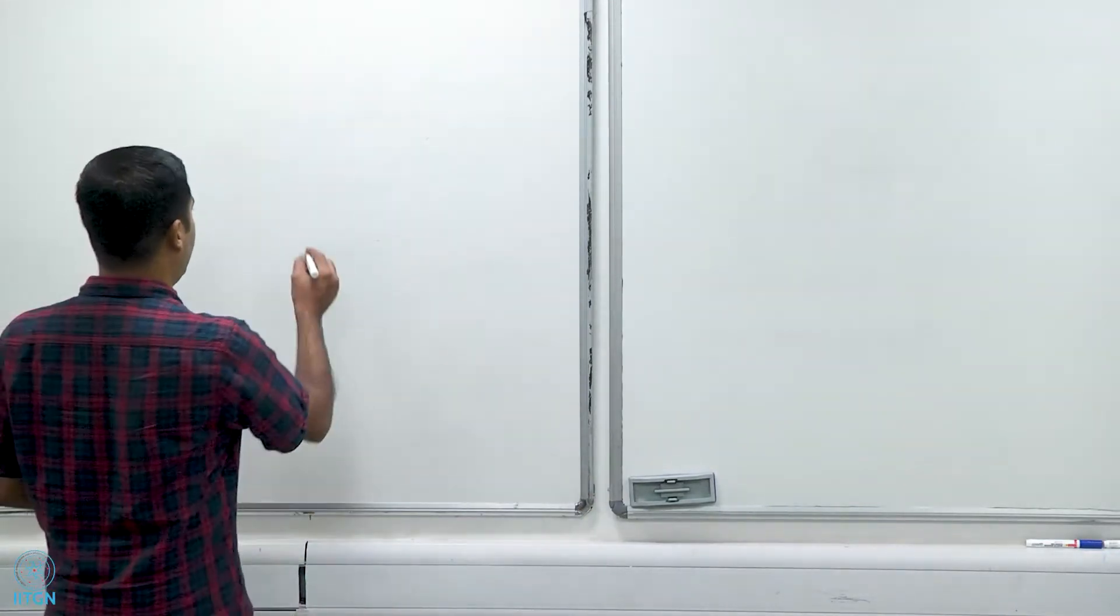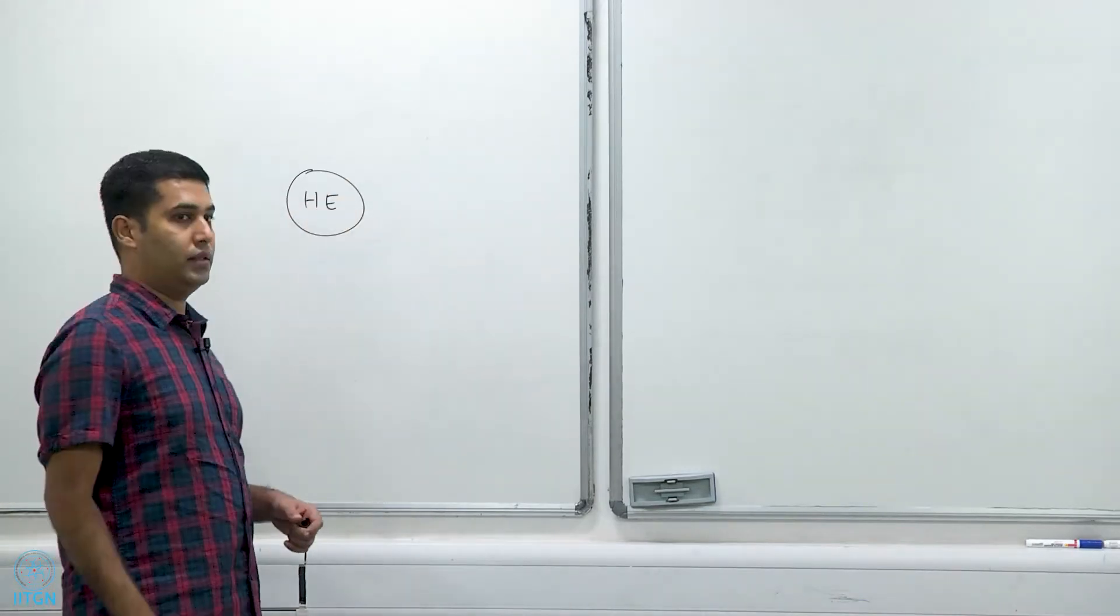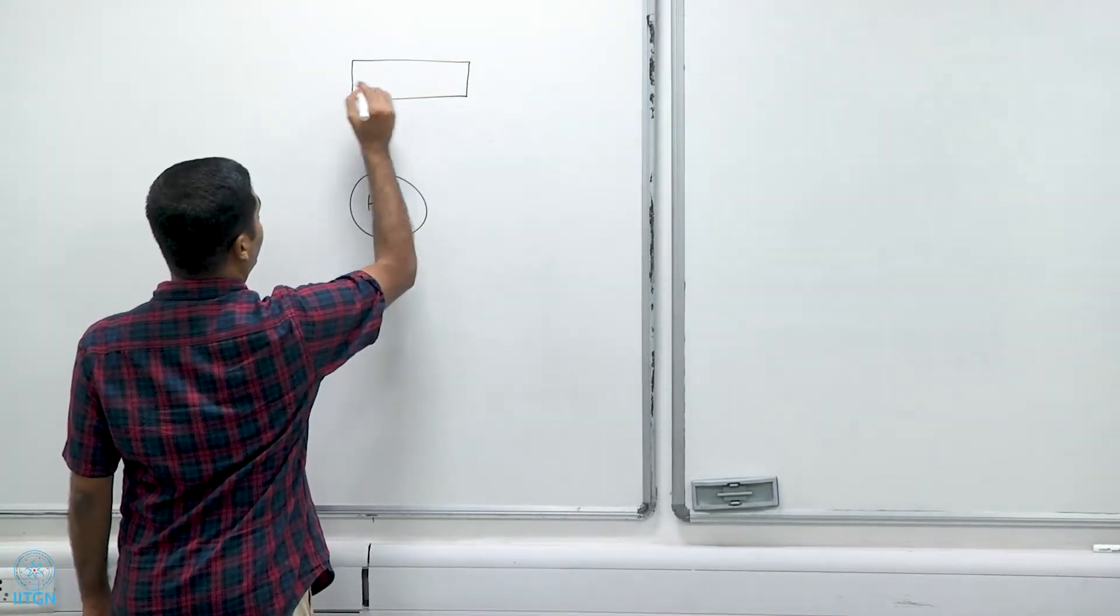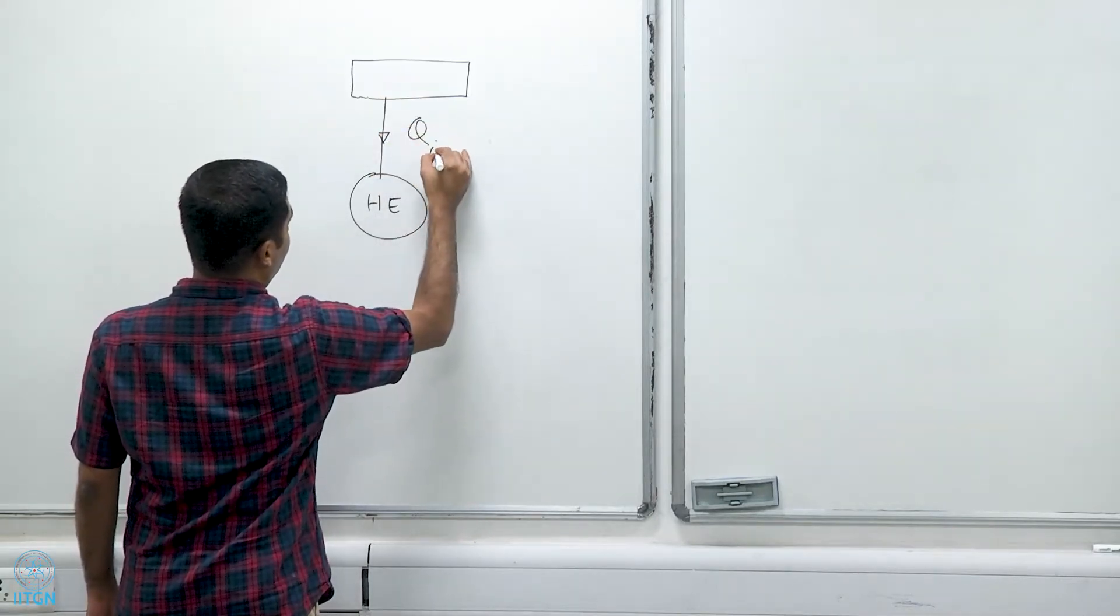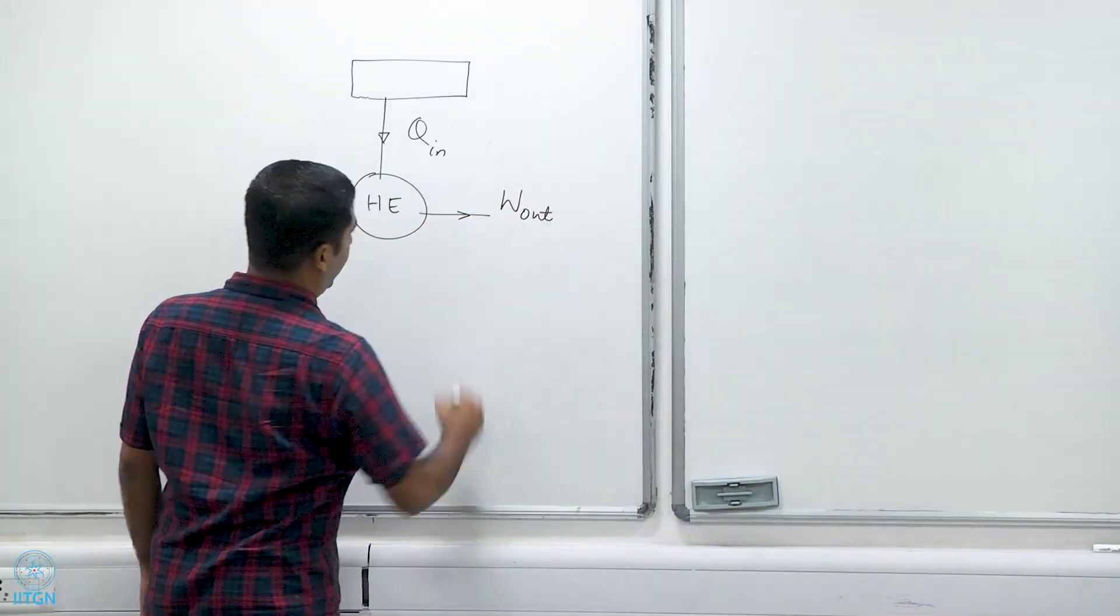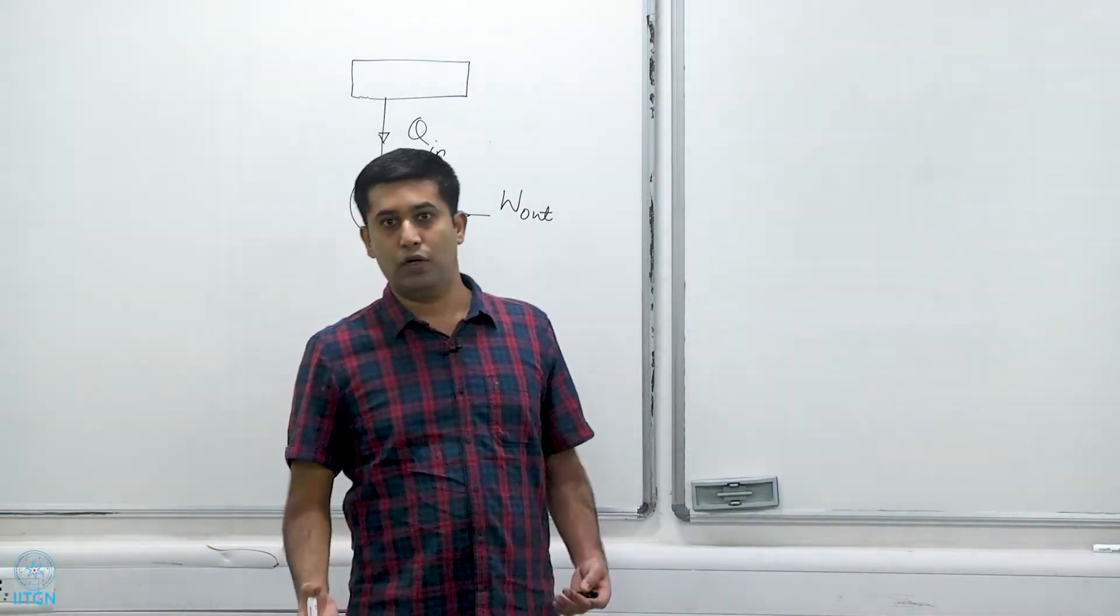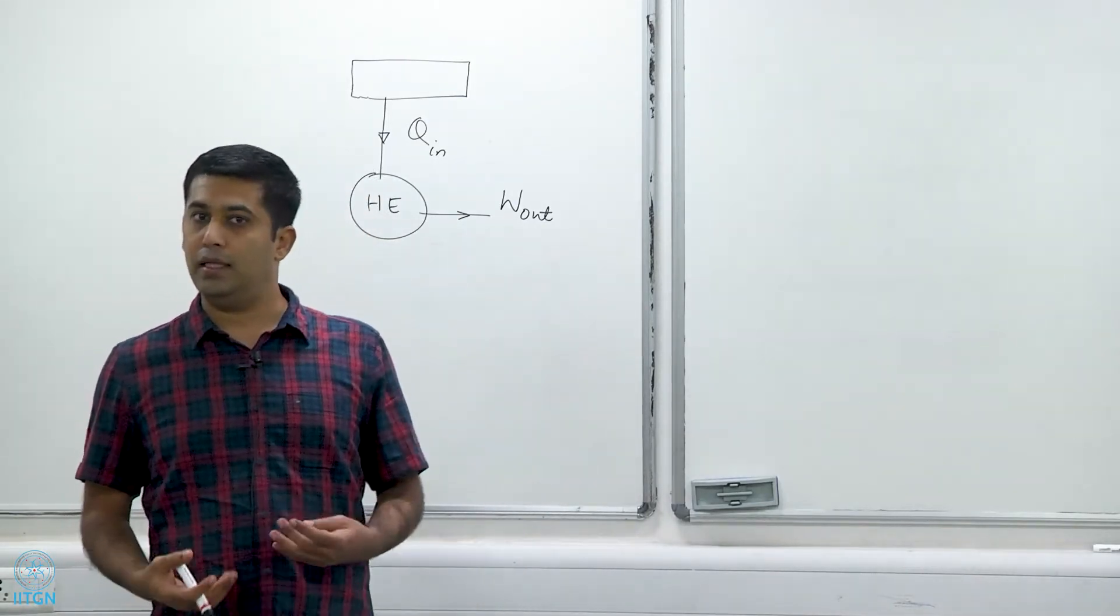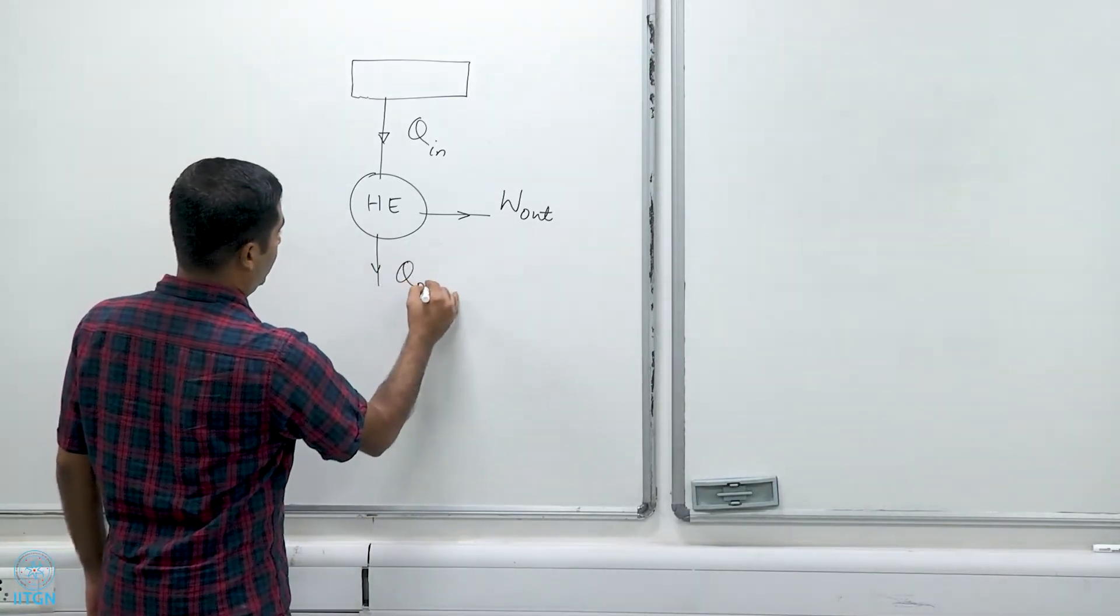Heat engines are symbolically represented with a circle with HE written at the center. I have a thermal energy reservoir and then I transfer some heat Q_in to the engine, and some of that heat is converted to work by the engine. As is typically the case, not all of the heat can be converted to work and some of that heat is dumped out to a low temperature reservoir.